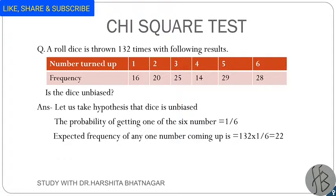A rolled dice is thrown 132 times with the following results. The numbers turned up and their frequencies are given, and it is asked whether the dice is unbiased or not. Here, only one variable is given — the number turned up and frequencies — so we will check whether the assumed distribution fits the observed data. Let us take the hypothesis that the dice is unbiased.